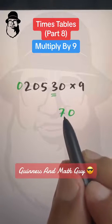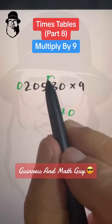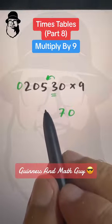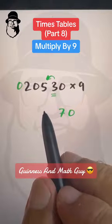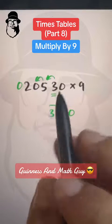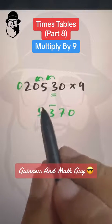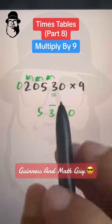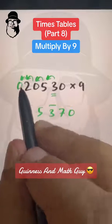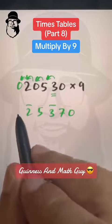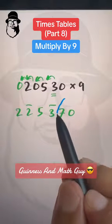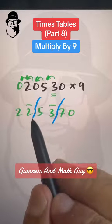We put 0 on the left. Be careful whenever there is 0 on the right side of the number. This from 10 is 7, then 3 minus 5 is bar 2, but we subtract 1 from the first result so bar 2 becomes bar 3. Then 5 minus 0 is 5, 0 minus 2 is bar 2, and 2 minus 0 is 2. Here we split the number.